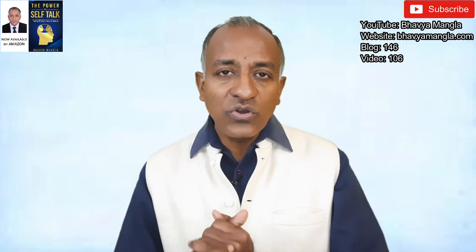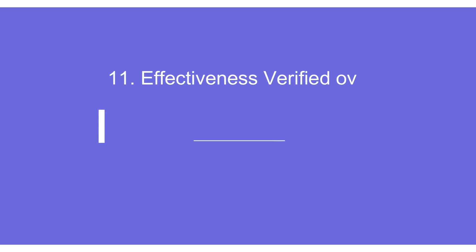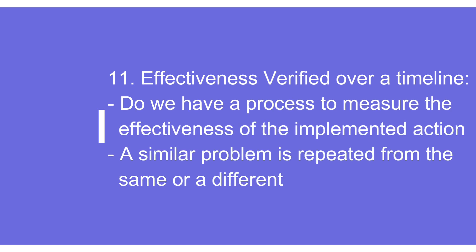Step number eleven talks about verifying the effectiveness of actions over a time period. Immediately after implementation we may get a good response, but what about effectiveness over time? In many customer formats it is specified that for the next three months we need to review the material being supplied and its effectiveness. One key feedback mechanism is talking to the customer to understand whether they are getting the same problem, or a new problem has appeared because of the action plan.